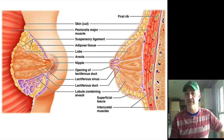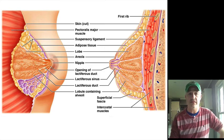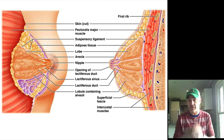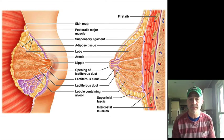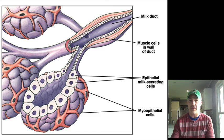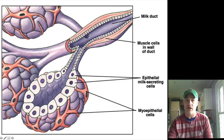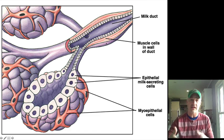You can see the mammary structures here. There are multiple openings on the nipple—not a single opening, but numerous ducts. The myoepithelial cells in the duct walls are what oxytocin acts on to cause milk letdown. That completes all the reproductive structures, and we'll next move into the physiology of the reproductive hormone cycles.